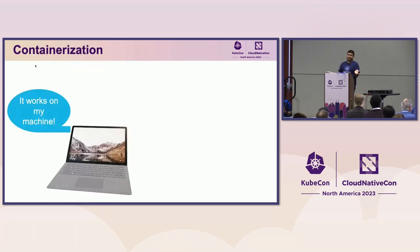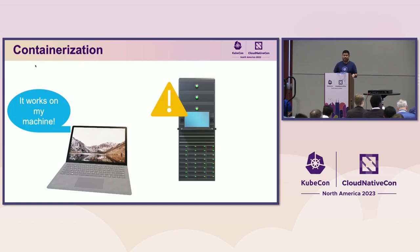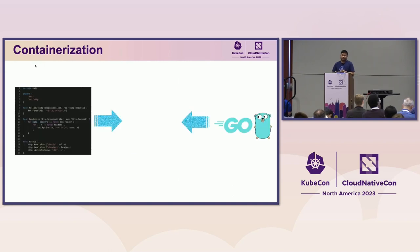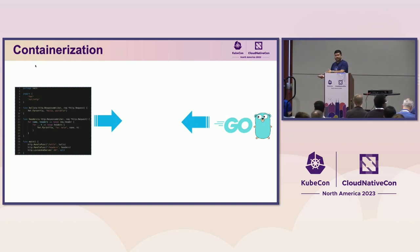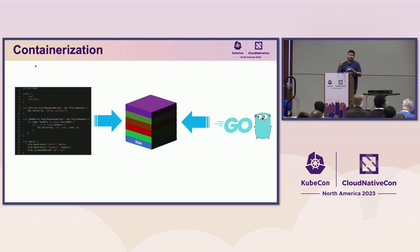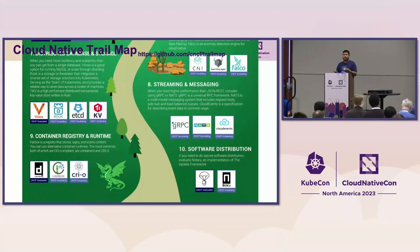Why do we containerize? It solves problems like 'it works on my machine but not the server,' and improves server utilization. With containerization, we take the application source code and its dependencies and build a layered container image starting with a base layer. This container image is read-only and therefore immutable, giving us the same execution state every time we run a container.